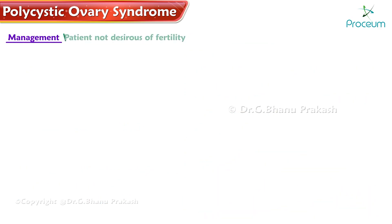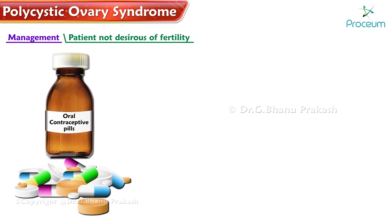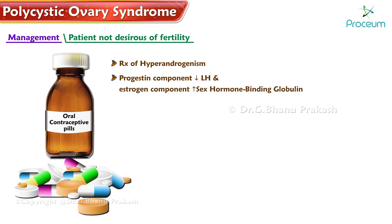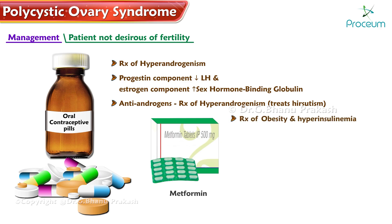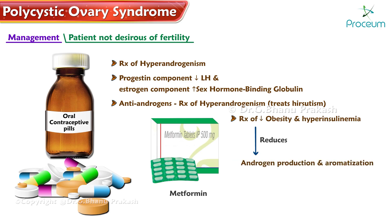If a patient is not desirous of fertility, oral contraceptive pills are used for managing hyperandrogenism — the progestin component reduces LH and the estrogen component increases sex hormone-binding globulin. Antiandrogens treat hirsutism. Metformin is used for obesity and hyperinsulinemia; reduction in obesity reduces androgen production and aromatization.